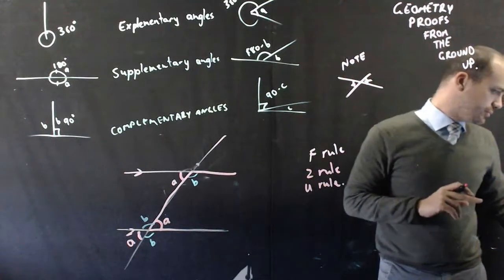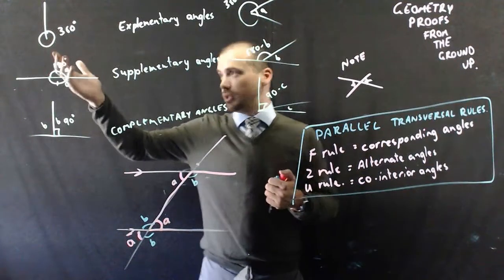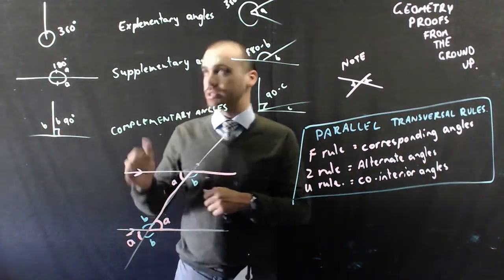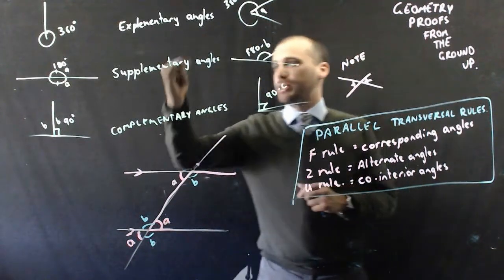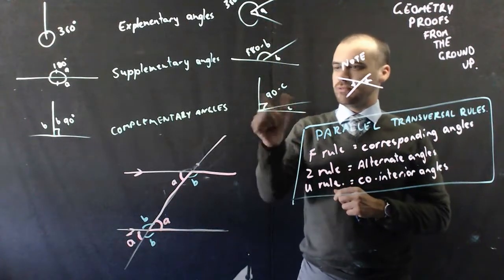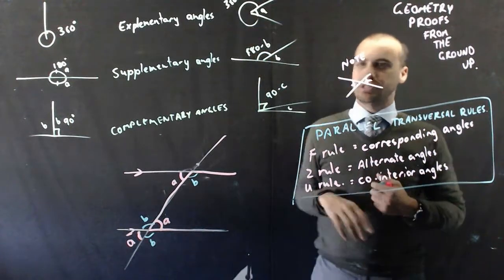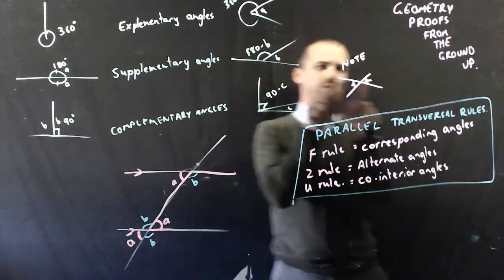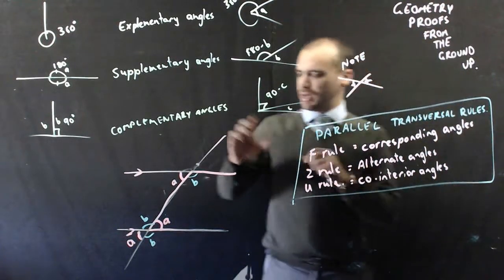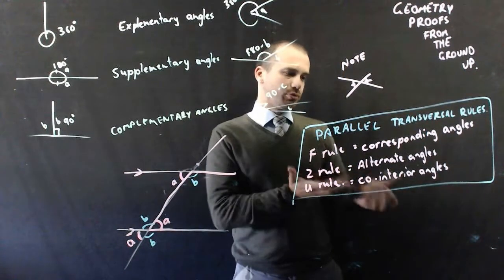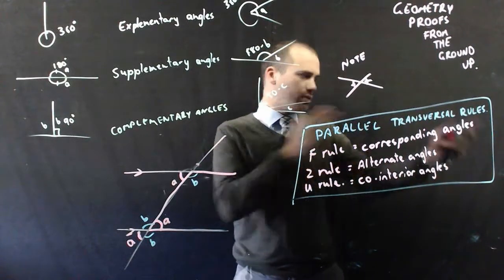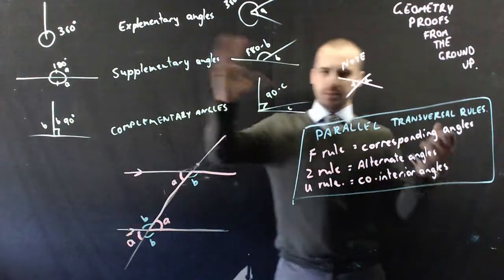Recapping: someone invented 360 degrees in a circle, which meant we could prove a straight line has 180 degrees, and that something perpendicular to that line would be 90 degrees. Using those ideas we get exclementary, supplementary, and complementary angles, which are useful in geometric proofs — if we know one angle, we can find the other using 90 minus C, or 180 minus B, or 360 minus A. Building on that, vertically opposite angles are easy to prove. And parallel lines with transversals give us three neat rules that just flow on from our ideas of supplementary angles — there's no new magic there.